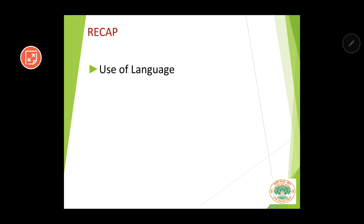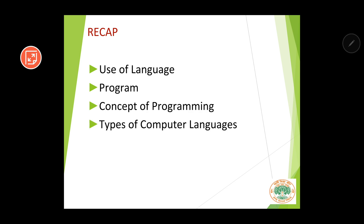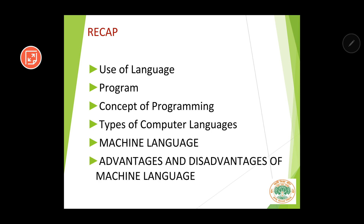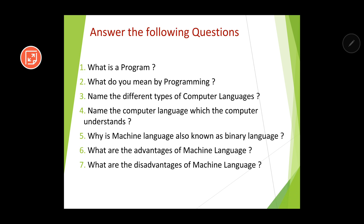To summarize what we have learned in this session: we learned that language is used for communication; we learned the concept of program as a set of instructions; then we learned the concept of programming; then we learned the types of computer language and discussed machine language, which is the only language a computer understands; and finally we saw the advantages and disadvantages of machine language. I hope this session was clear and useful. Based on this session, I have framed certain questions for all of you to answer.